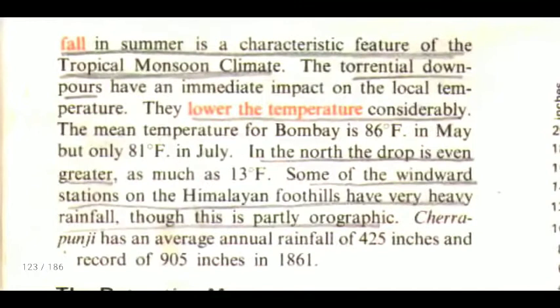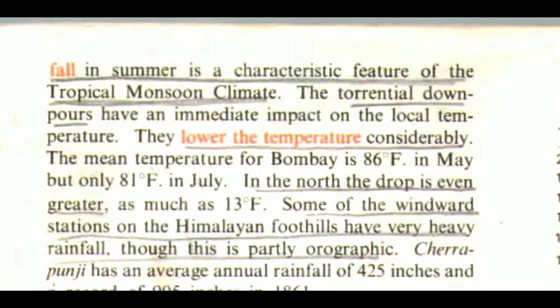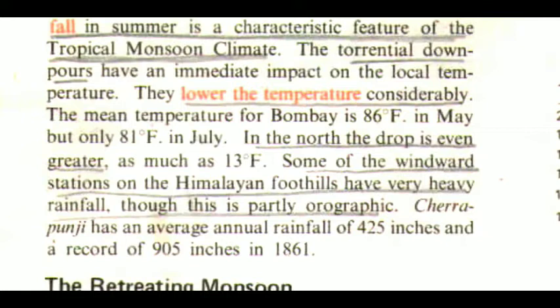The torrential downpours have an immediate impact on the local temperature — they lower it considerably. The mean temperature for Bombay is 86 degrees Fahrenheit in May, but only 81 degrees Fahrenheit in July. In the north, the drop is even greater, as much as 13 degrees Fahrenheit. Some of the windward stations on the Himalayan foothills have very heavy rainfall. Though this is partly orographic, Cherrapunji has an average annual rainfall of 425 inches and a record of 905 inches in 1861.